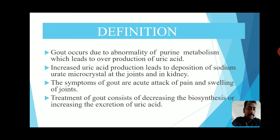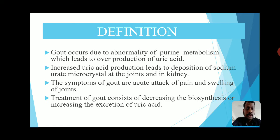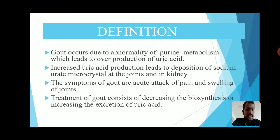The increased uric acid causes pain, swelling, and inflammation at the joints. The symptoms of gout are acute attack of pain and swelling of joints. Treatment of gout consists of decreasing the biosynthesis or increasing the excretion of uric acid.